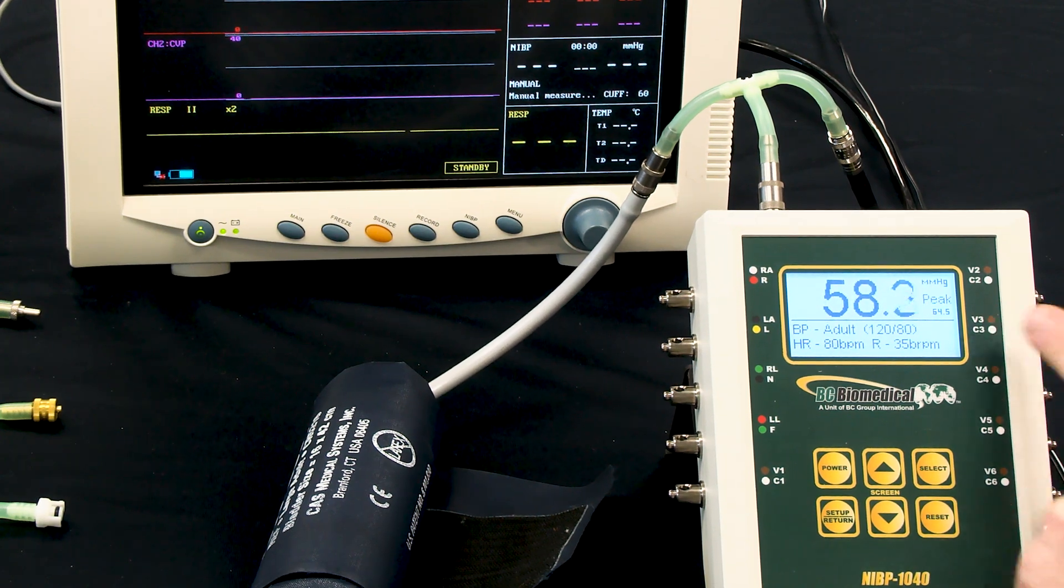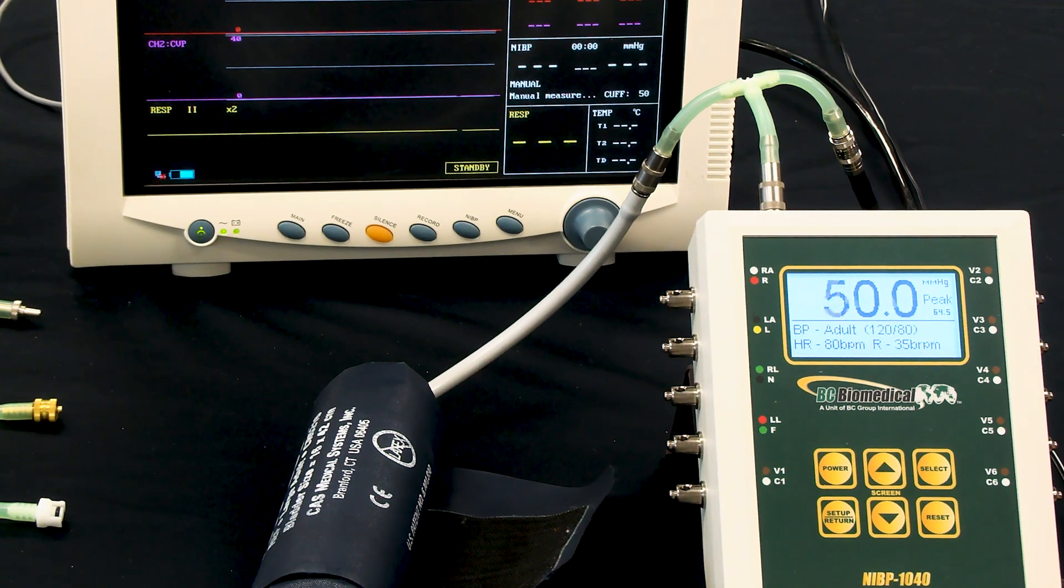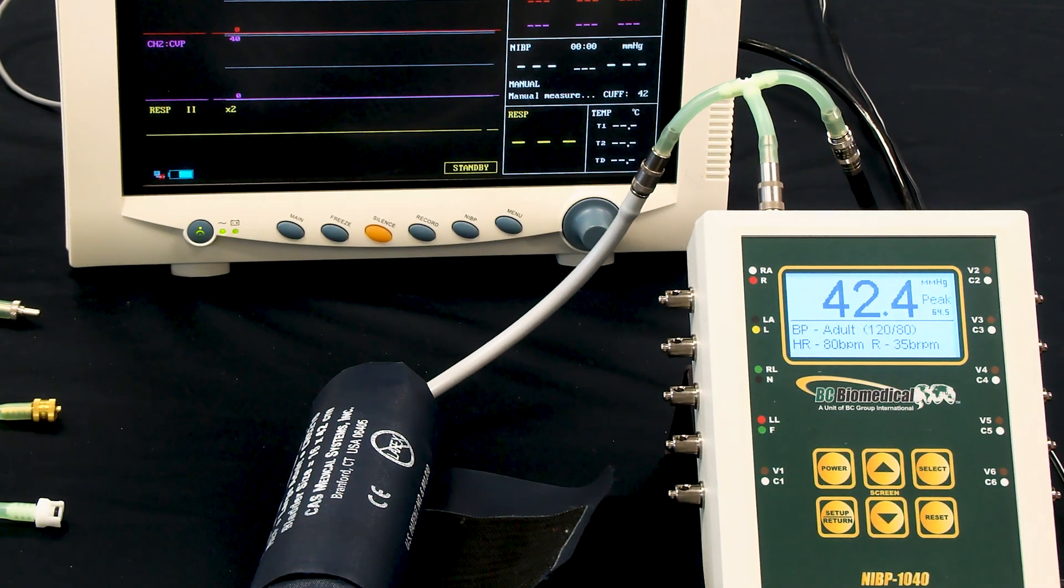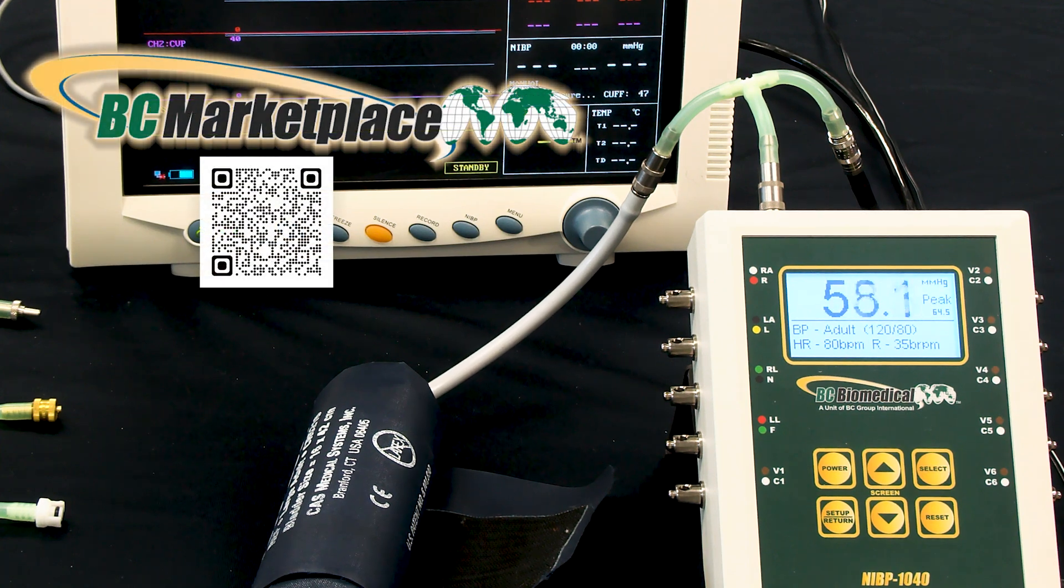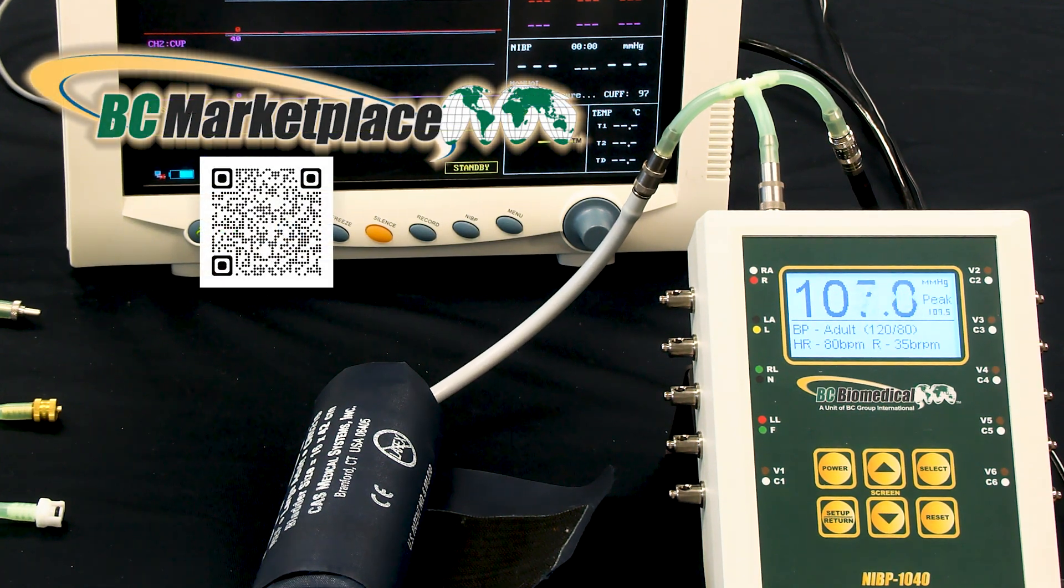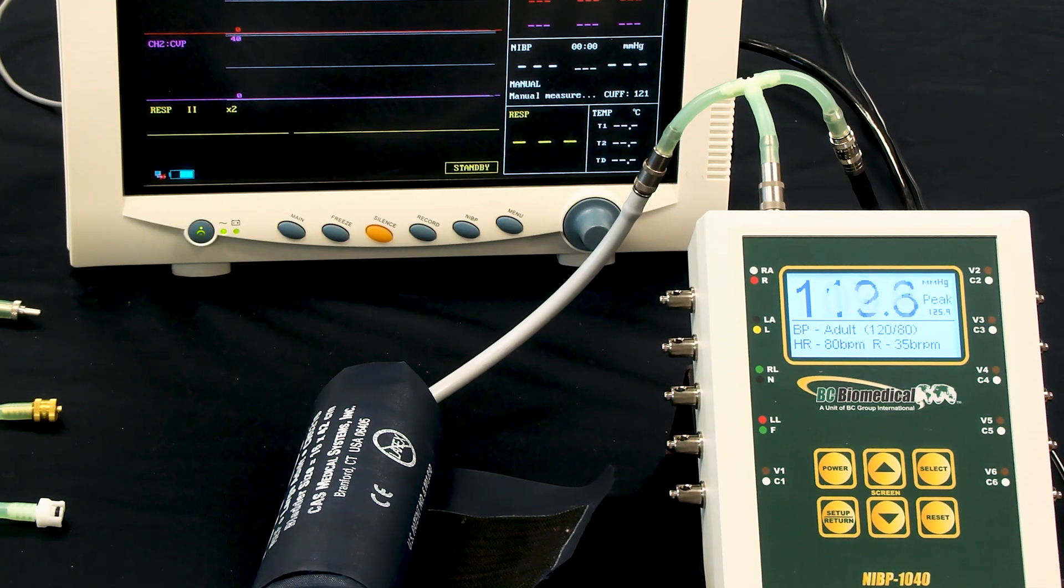Now this unit shows peak, but we have several various models of the NABP that are available. There's a compatibility chart available on the website that will show which model has each feature. So if you're looking for the peak pressure, make sure that you get a unit that does have that feature.